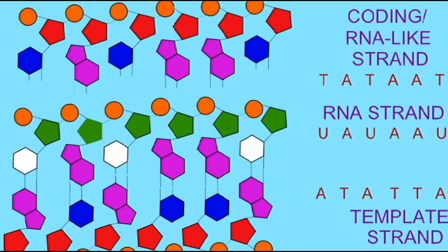And so therefore the coding/RNA-like strand of the DNA molecule is virtually identical to the RNA molecule, with the exception that the DNA strand has thymine, the RNA strand has uracil, and obviously the sugars are different.